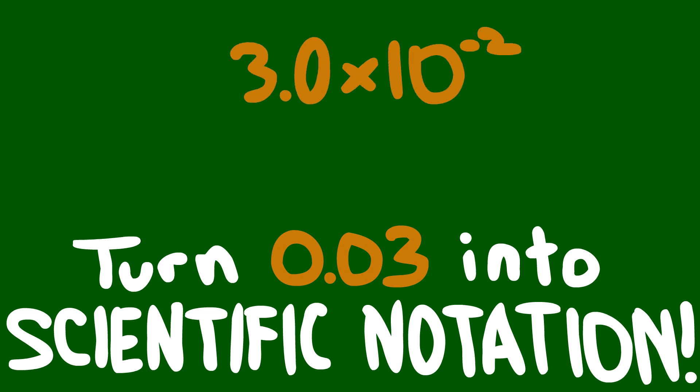Ten to the negative two is 0.1 times three. That's 0.03, so yeah, there's your proof.